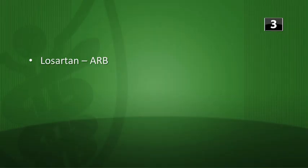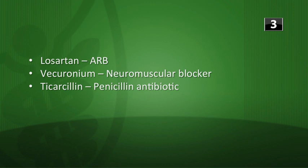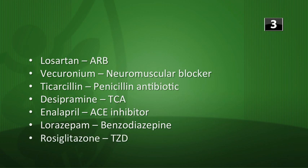Third question: what drug categories do each of the following medications fall under? Losartan is an ARB. Vecuronium is a non-depolarizing neuromuscular blocking drug. Ticarcillin is a penicillin antibiotic — a cell wall inhibitor. Desipramine is a tricyclic antidepressant. Enalapril is an ACE inhibitor. Lorazepam is a benzodiazepine. Rosiglitazone is a thiazolidinedione used in type 2 diabetes. Now you're warmed up and ready for the lecture.